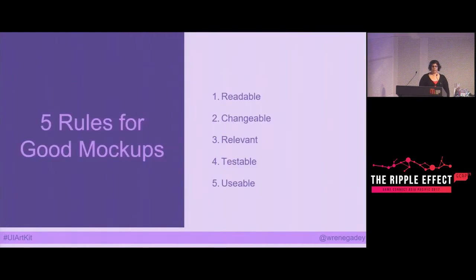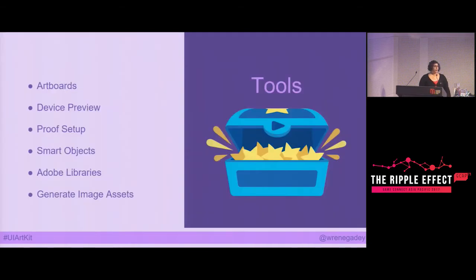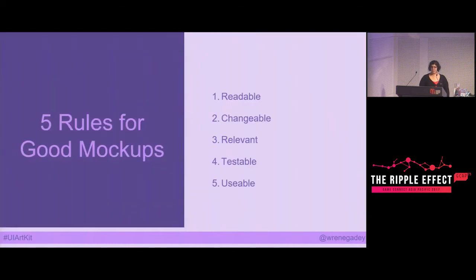So let's start dealing with all of these issues. I have five rules for making good mockups. They have to be readable — easy to view and understand. They need to be changeable — easy to iterate on, fix mistakes, collaborate. They need to be relevant, so always accurate to your final result. They need to be testable — able to test the design as early as possible. And finally, they need to be usable. I don't like making mockups that are just concept art. They need to be what I can actually put in the final game — I want to export assets straight out of my mockups, the shortest possible journey from concept to exportable assets.